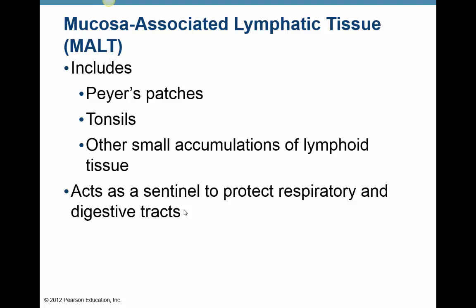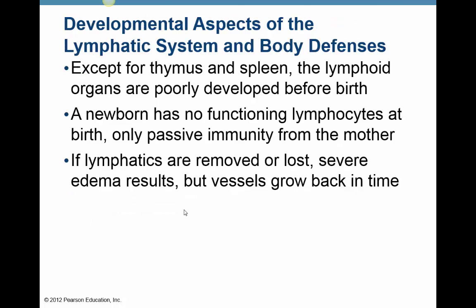As we age, lymphatic tissues are not well developed prior to birth. The development of lymphatic tissue and our immune system actively happens during early development after birth and childhood. That's why we talk about the importance of breastfeeding — a newborn does not have any functioning lymphocytes and has very little resistance to infection. Breastfeeding allows the newborn to have the mother's antibodies and protection from infection based on what the mother has been exposed to in her lifetime. It's encouraged that mothers breastfeed for at least the first six months until that immune system starts to develop.